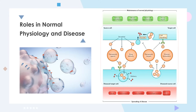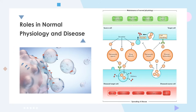Extracellular vesicles can be used as therapeutic agents because they are secreted by most cells, rich in RNA, and capable of transferring their contents to recipient cells. They are very suitable for drug delivery, especially for the delivery of therapeutic nucleic acids. However, extracellular vesicles can also participate in pathological conditions. For example, they can support tumor growth by inducing harmful immune tolerance, spreading oncogenes such as MET, initiating angiogenic procedures, and promoting metastasis. In the context of autoimmune diseases, extracellular vesicles can induce an immune response against auto-antigens.